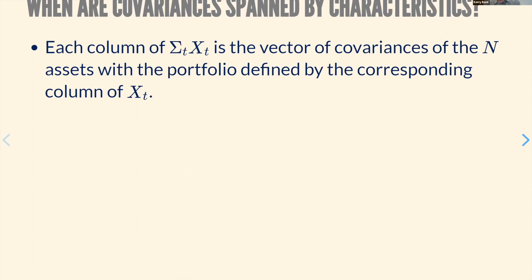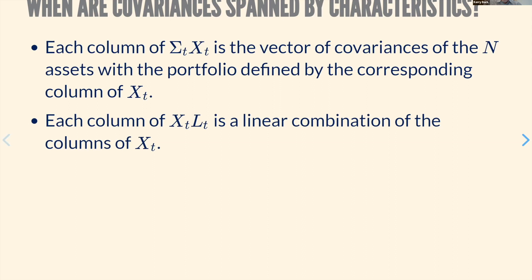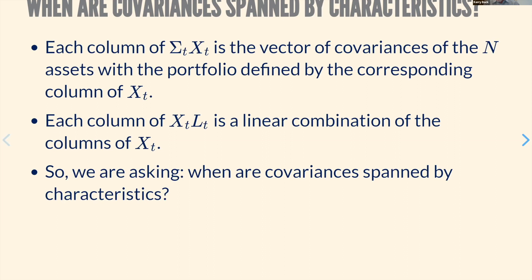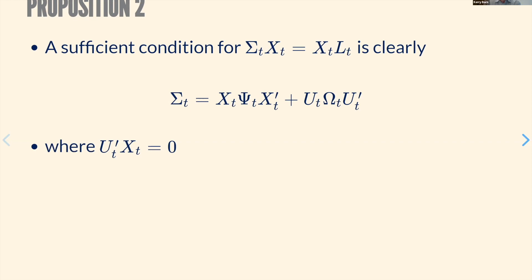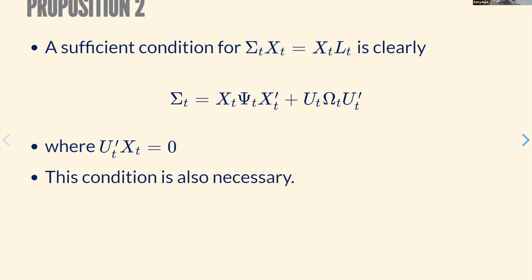An equivalent question, pre-multiplying by sigma and post-multiplying by S-inverse, is: when does sigma times X equal X times L for some matrix L? When this holds, it's a statement that covariances are spanned by characteristics. Each column of sigma-X is a vector of covariances, and each column of X times L is a linear combination of characteristics X. So we're asking: when are covariances with the X portfolios spanned by the X characteristics?